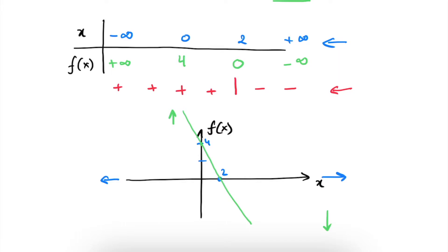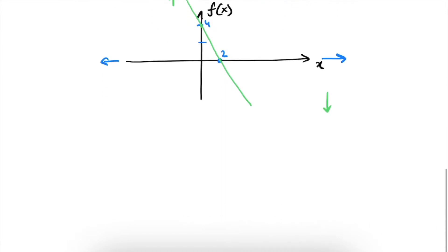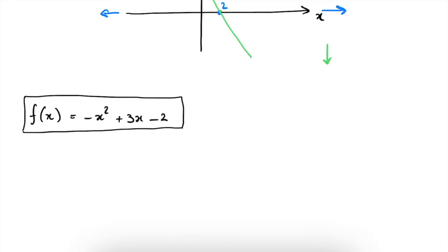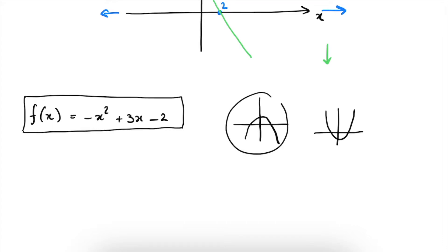Let's now step it up a bit and go to the next exercise. We will look at the function f of x is equal to minus x squared plus 3 times x minus 2, which is a polynomial of second degree because the highest power of x is equal to 2. We know about polynomials of second degree that they are graphically represented by a parabola. It will be a parabola which is pointed downward — a sad parabola — because there is a minus sign in front of the x squared.